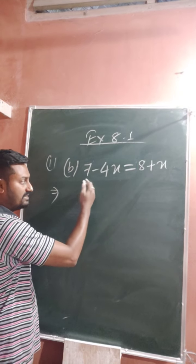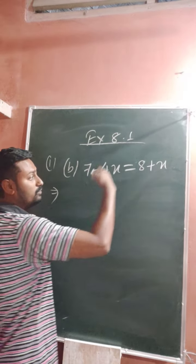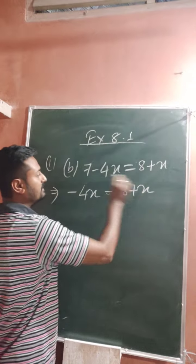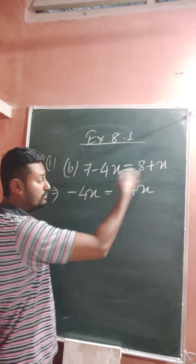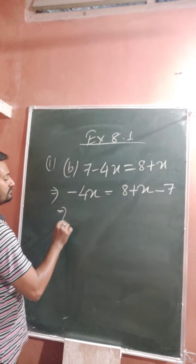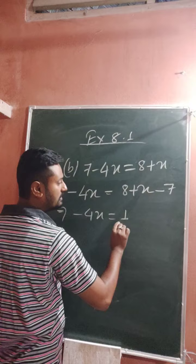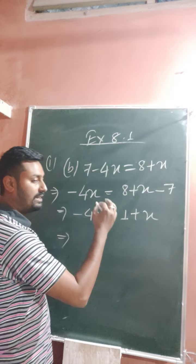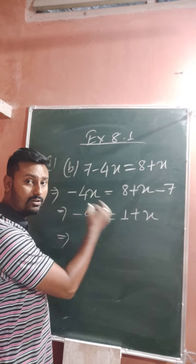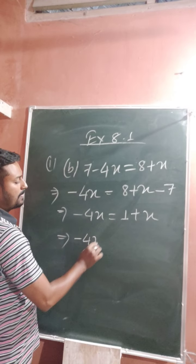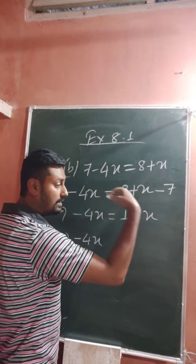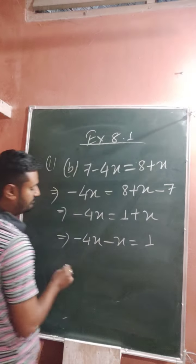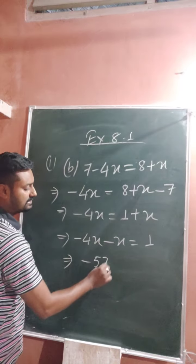The 7 is on the left side with minus 4x. When 7 goes to the other side, it becomes subtraction — so minus 4x remains the same, and 8 minus 7 becomes 1 plus x. Now your task is to keep x on one side only. The x on the right hand side is positive; when it comes to the left side it becomes negative. So minus 4x minus x becomes minus 5x equals 1.